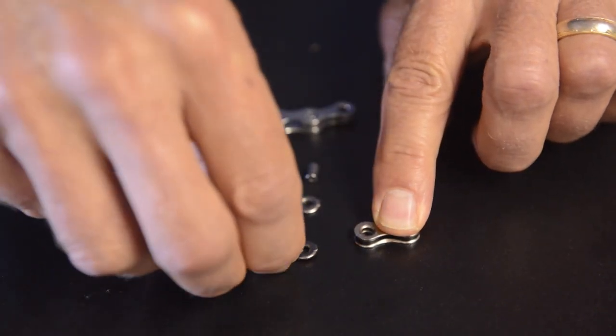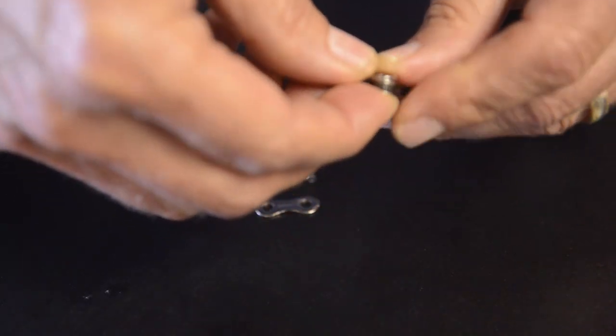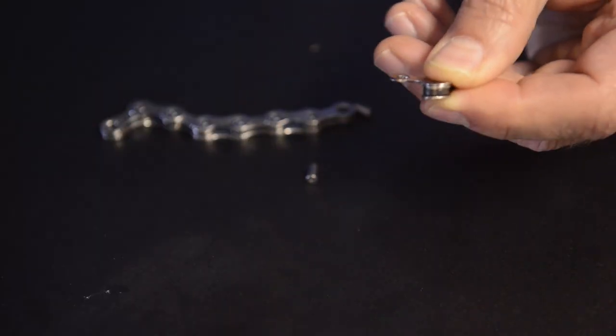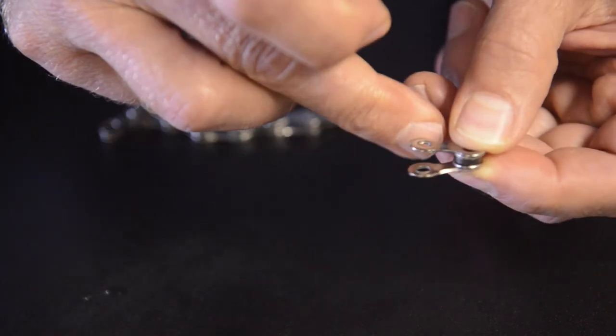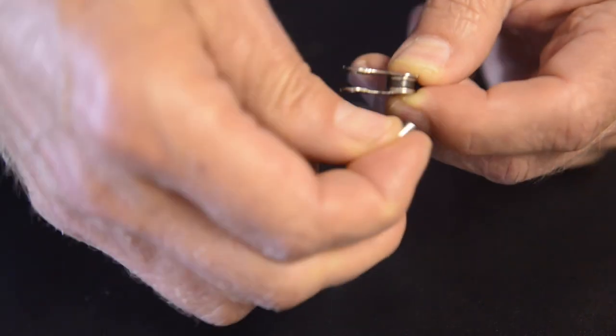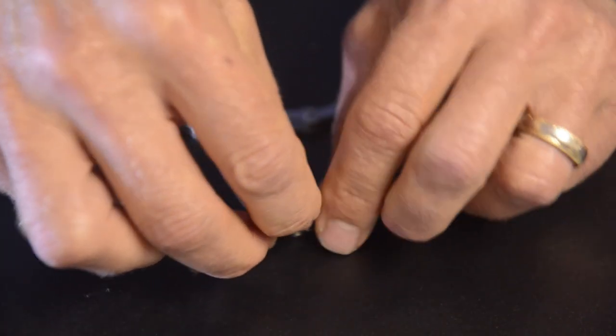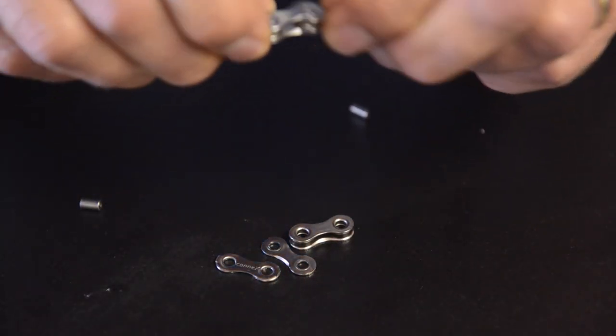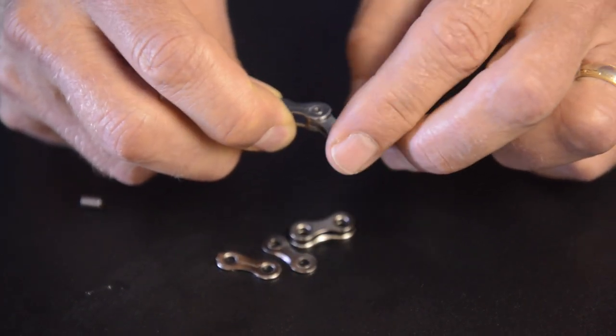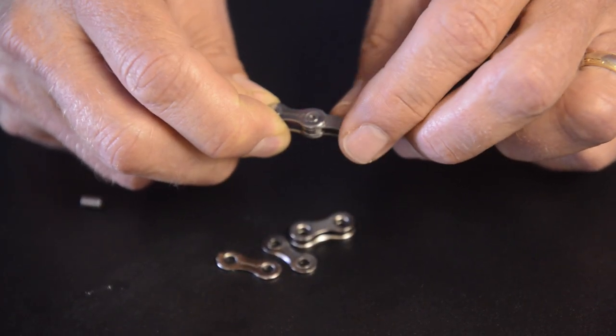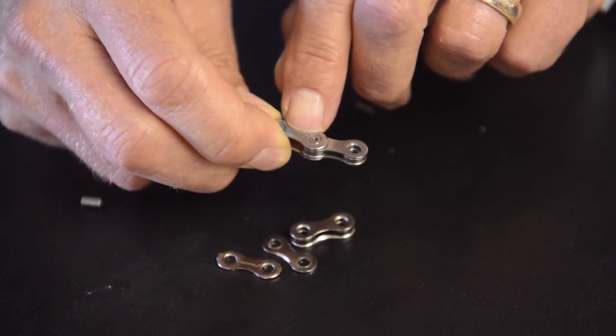The inner link is captured by an outer plate on one side and an outer plate on the other side, and then a pin is riveted to the outer plate and that's what holds the whole thing together. The result is a structure like this where the inner link moves on a fixed pin that is riveted to the outer link.